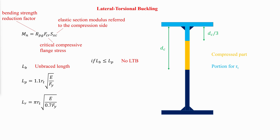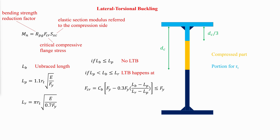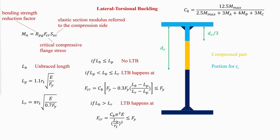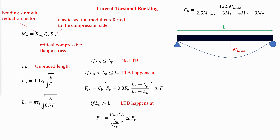If the unbraced length is less than LP, there is no risk of lateral torsional buckling. If the unbraced length is between LP and LR, FCR corresponds to inelastic lateral torsional buckling. If the unbraced length is greater than LR, FCR corresponds to elastic lateral torsional buckling. CB is defined by AISC equation F1-1, where M-max is the absolute value of the maximum moment in the unbraced segment, M-A is the absolute value of the moment at the quarter point, M-B is the absolute value of the moment at the centerline, and M-C is the absolute value of the moment at the three-quarter point of the unbraced segment.